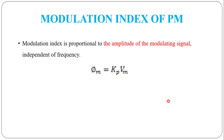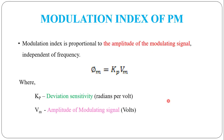The modulation index of PM, φm, is directly proportional to the deviation sensitivity and the amplitude of the modulating signal. The modulation index for PM is given by kp × Vm, where kp is the peak phase sensitivity and Vm is the amplitude of the modulating signal.